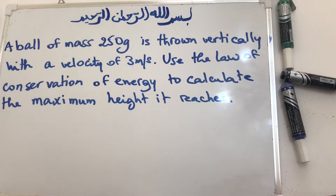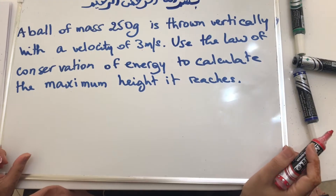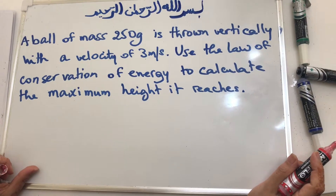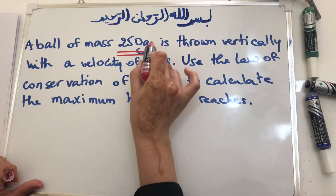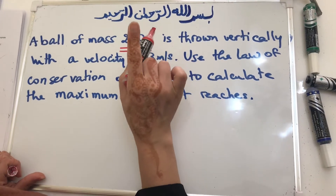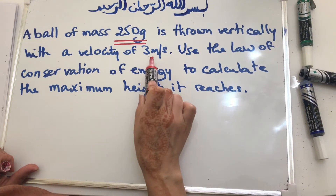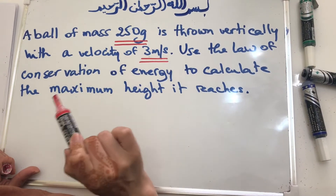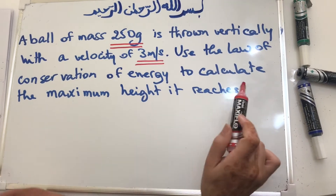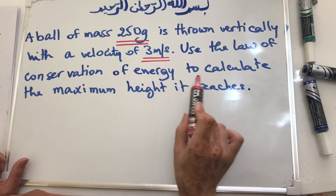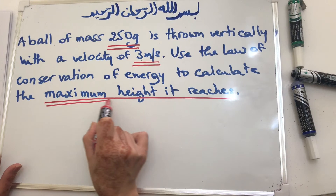Assalamu alaikum guys, we're gonna solve a question about conservation of energy. The question says a ball of mass 250 grams — first of all, is this the unit I want? I need to convert it to kilograms. It's thrown vertically with a velocity of 3 meters per second, so this is not in kilometers per hour, I'm happy. Use the law of conservation of energy to calculate the maximum height it reaches.